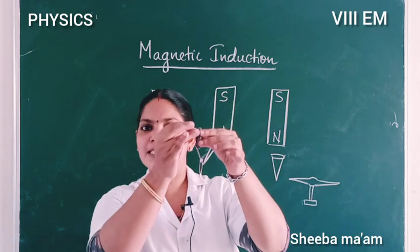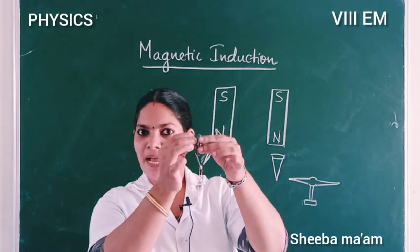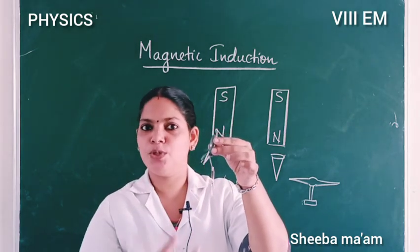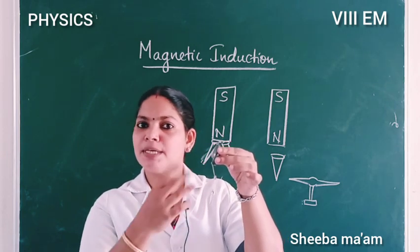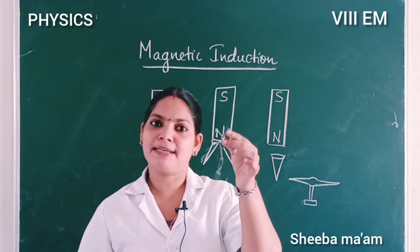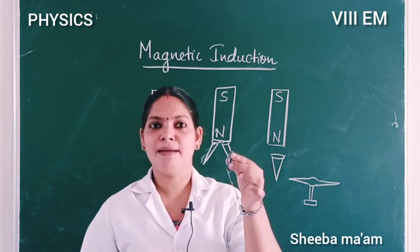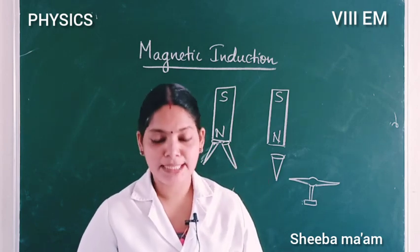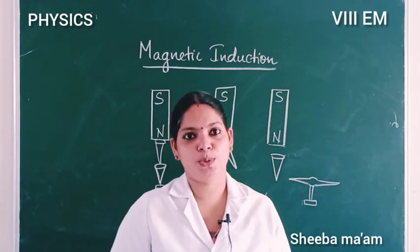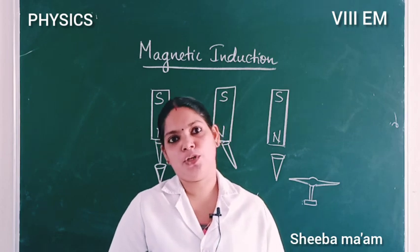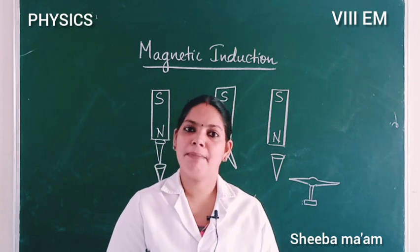In the presence of a magnet, the magnetic property is induced to the pins. In the presence of a magnet, the magnetic property is induced — or acquired — by the magnetic substances. This phenomenon is known as magnetic induction.